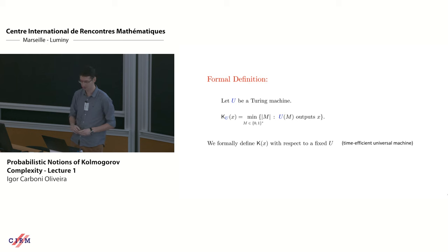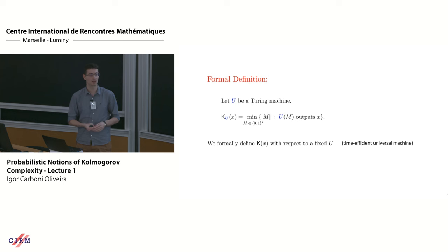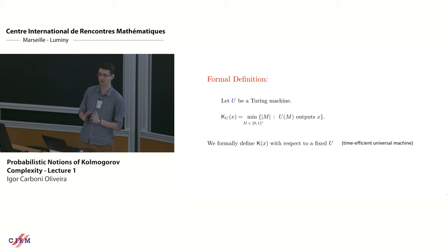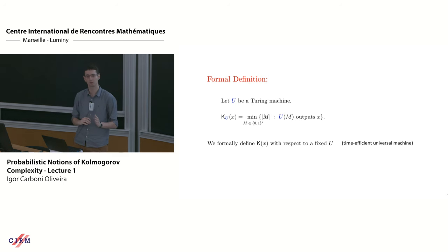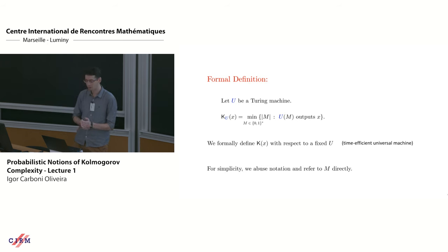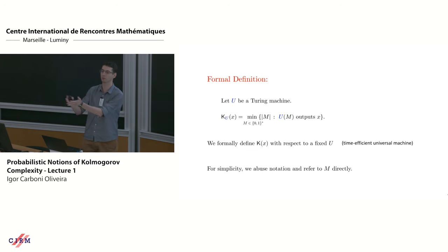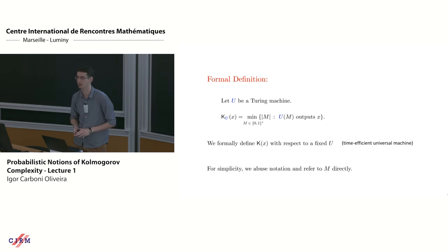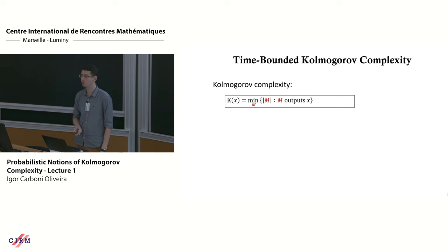There's a fixed universal machine and we won't be discussing it further. For the experts, everything I say won't depend on whether we use prefix-free complexity or not — everything holds regardless of the machine, up to some log factors. Kolmogorov complexity is great, but unfortunately it's uncomputable.